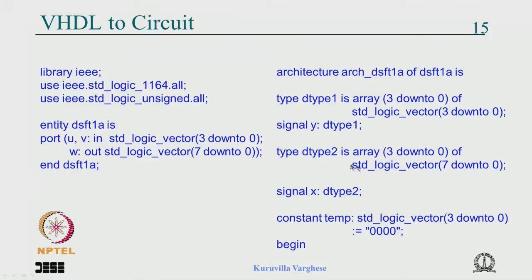Coming to the architecture, before the begin we have some declarations. dtype1 is a new data type which is an array of 4 locations each of 4 bits, and we declare y of this type — meaning there is y3, y2, y1, y0 each of 4 bits. Another data type is 4 locations of 8 bits, and x is declared of that type: x3, x2, x1, x0 each of 8 bits. We also define a constant temp which is a 4-bit vector of all zeros.